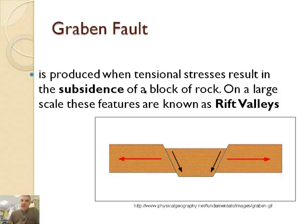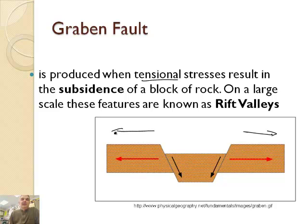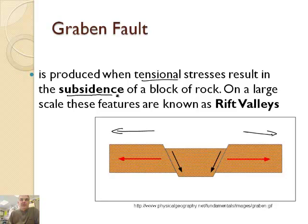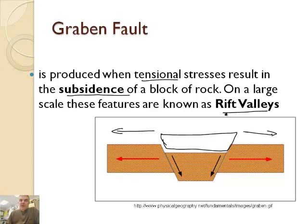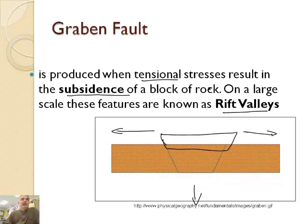There's a couple other kinds of faults, called the graben fault. It's produced when tensional forces, look at the red arrows, those represent the forces, result in a subsidence. That means settling down to the bottom of a block of rock. On large scale this feature's known as a Rift Valley. See how that looks like a Rift Valley? As time goes on, we're gonna get a valley right here because it's ripping that part apart, and then this just sinks down into the lithosphere.